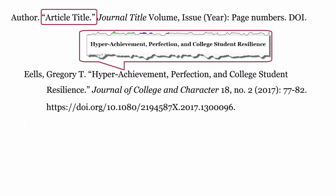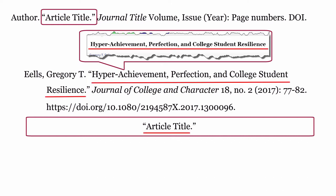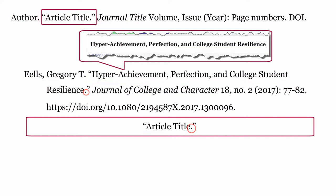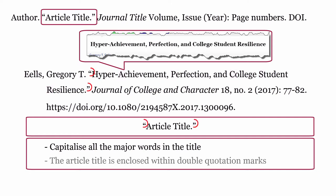Article title: The article title is formatted using the title of the article, then a full stop. The title is written in headline style — this is done by capitalizing all the major words in the article title. Finally, the article title is enclosed within double quotation marks.